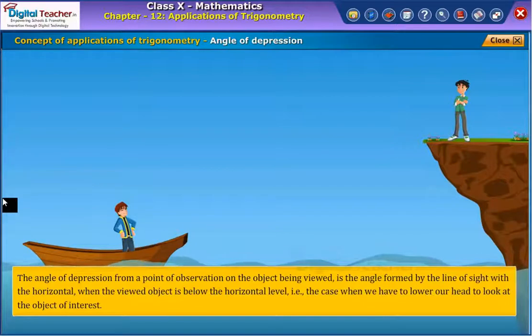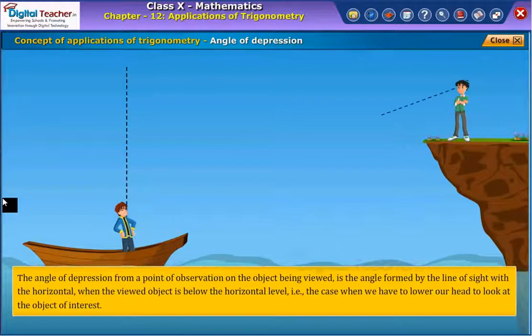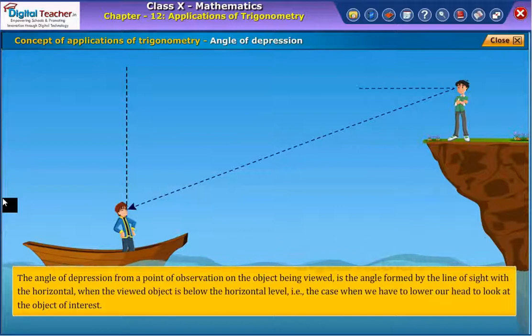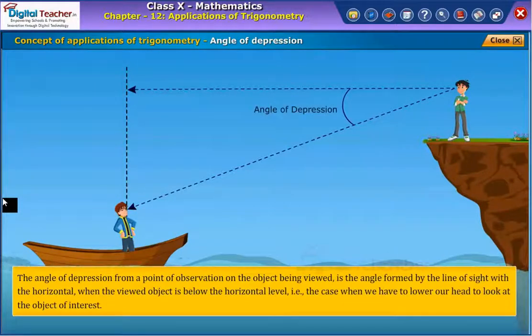For example, consider the previous scenario. Now, let Ramesh standing on the edge of the cliff saw his friend Suresh standing on the boat. The formation of angle of depression is shown on screen.